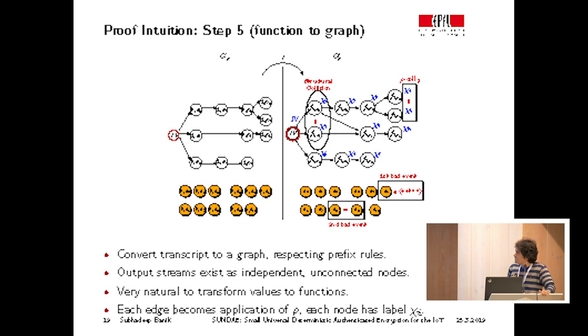And now converting the transcript to a graph is very natural if you follow simple rules of prefix. For input messages or input functions that have a common prefix, we just make sure that if they have the same prefix, then they follow the same path from the root to the leaf. So we can define two such graphs. One in which the nodes are simply the values. We can define a similar graph in which the values are converted into function sequences. Under most conditions, the graphs are isomorphic, though not always. And I'll come to the situation when they're not isomorphic. And of course, the output keystream produced by the algorithm is expressed by these yellow nodes. They exist as independent, unconnected nodes in the graph.